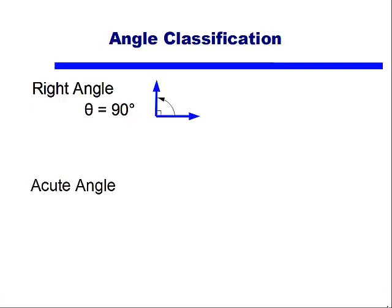We've also talked about acute angles. An acute angle is an angle that is between 0 and 90 degrees.